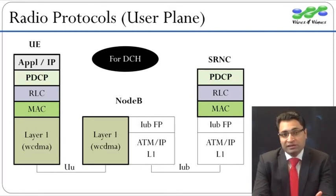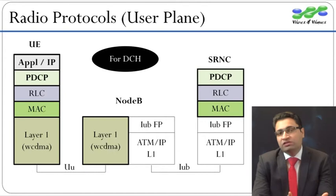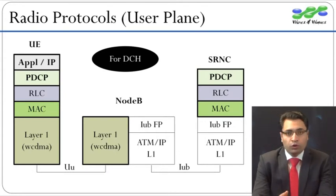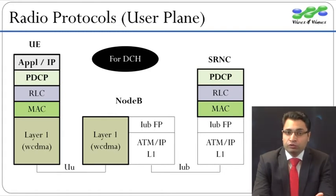The RLC layer of the UE sends a negative or positive acknowledgement which can cause retransmission. To summarize: number one, Node-B does not play any decision-making role in Release 99 — the decisions are made by the RNC. Number two, retransmissions are based on the Layer 2 RLC protocol, which is terminated between UE and RNC.